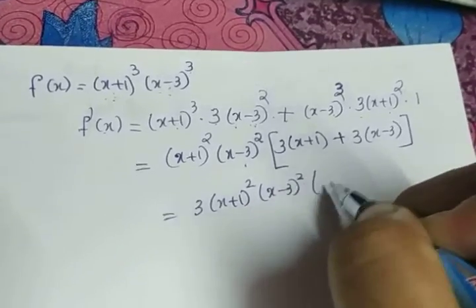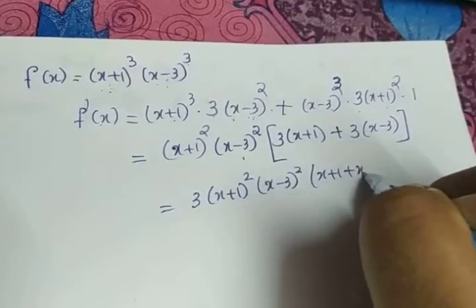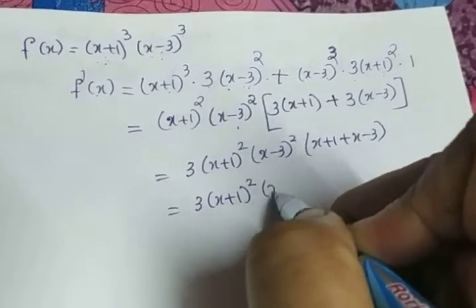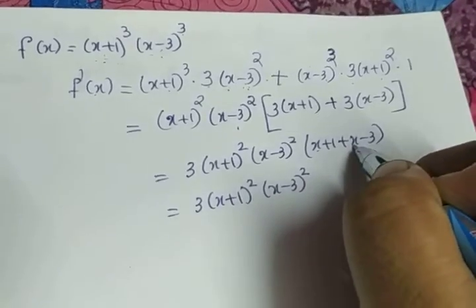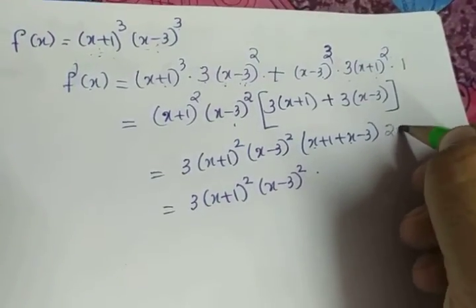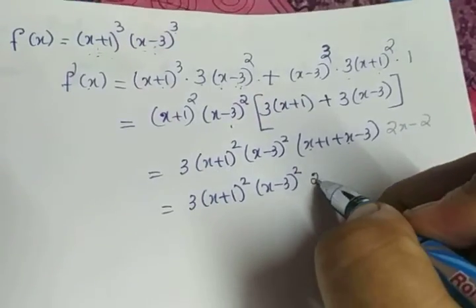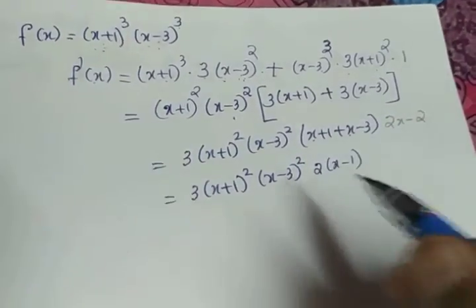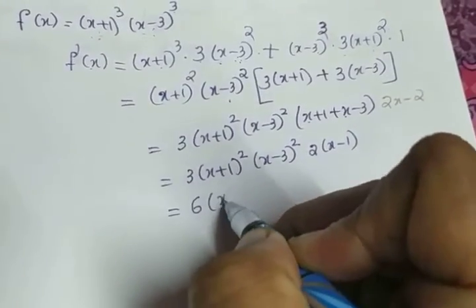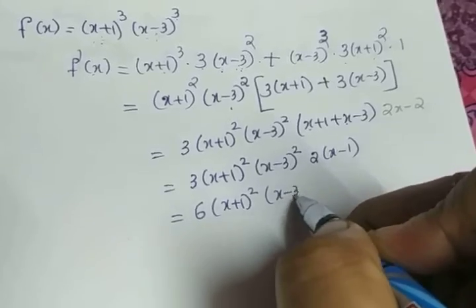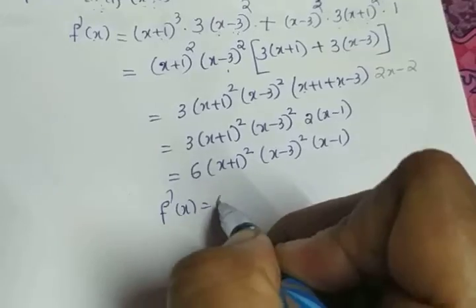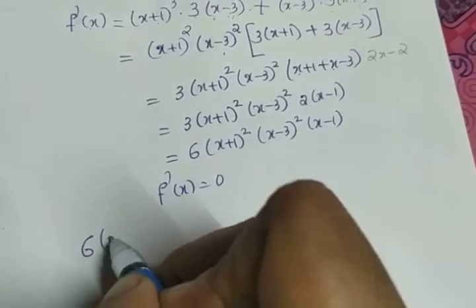Taking 3 outside as well, we get: 3·(x+1)²·(x-3)²·[(x+1) + (x-3)]. Simplifying inside the brackets: (x+1)+(x-3) = 2x - 2. Taking 2 outside gives 2·(x-1). Combining the constants 3 and 2, we get f'(x) = 6·(x+1)²·(x-3)²·(x-1).